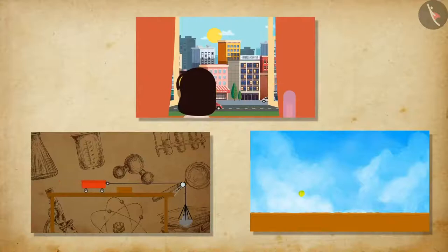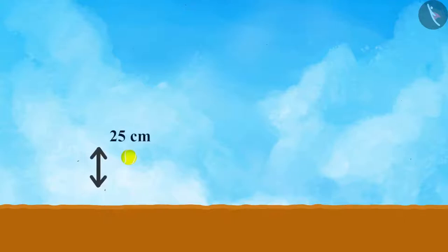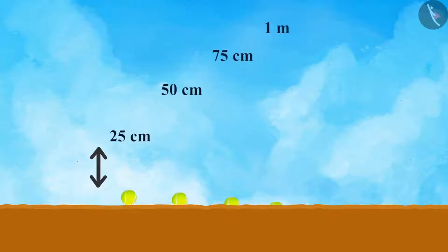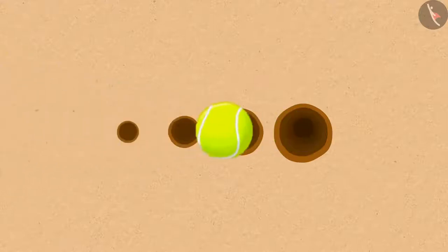Energy has various forms like kinetic energy, potential energy, heat energy, chemical energy, electrical energy, and light energy. Now let's perform a simple experiment to understand kinetic energy. Take a heavy ball and drop it in a bed of dry or wet sand. First drop the ball from a height of 25 cm, then keep increasing the height — 50 cm, then 75 cm, then 1 meter, and so on. Drop the ball at different positions each time so that you can have a clear view of the depression in the sand. Observe and compare the depths of the depressions.